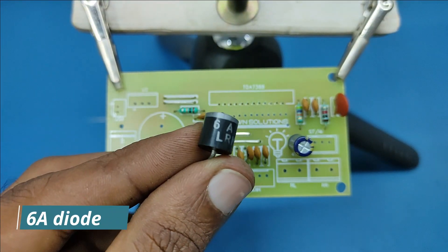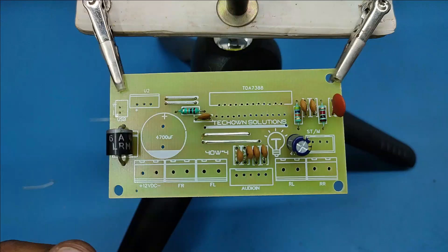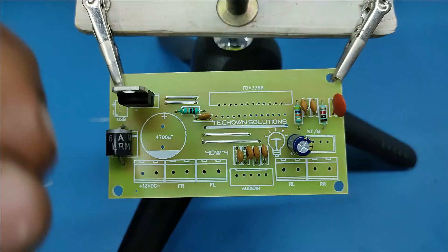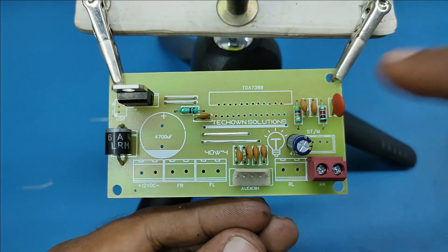A 6A diode is used as reverse polarity protection. And I am adding a 7805 voltage regulator for USB module or other digital audio receiver.